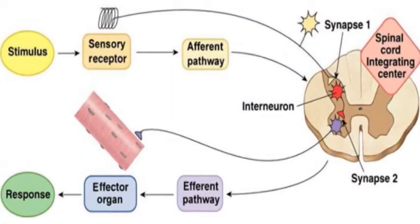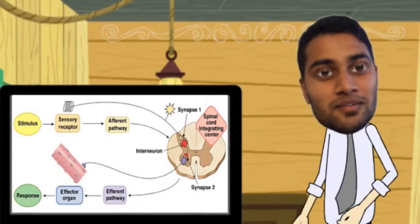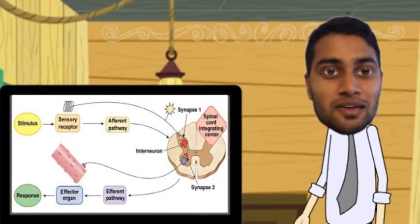When there is a stimulus, it activates sensory receptors. These receptors then send a signal through the afferent pathway to the spine. Here in the grey matter of the spine, the sensory neuron synapses into motor neurons. This can either be monosynaptic or polysynaptic depending on how many synapses occur. The signal then moves through the efferent pathways to the organ where it is required. The organ then reacts to the signal and a reflex response is produced.